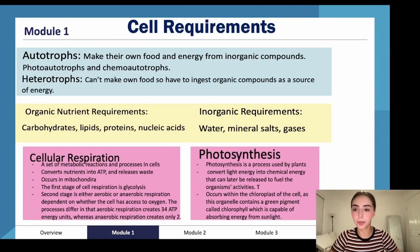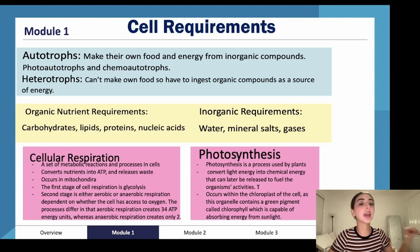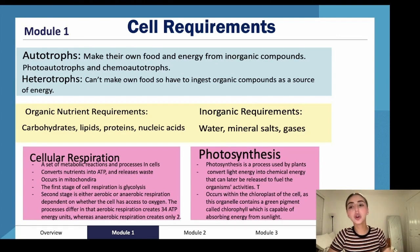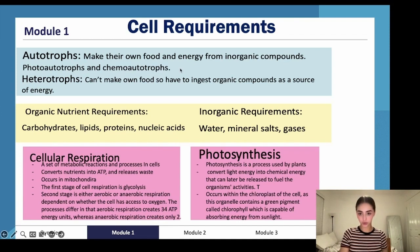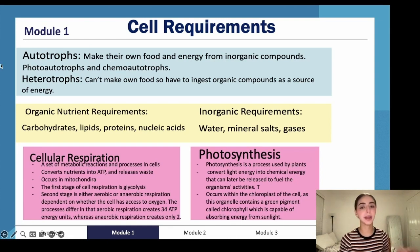So, requirements. We have autotrophs and heterotrophs. Autotrophs make their own food and energy from inorganic compounds. There are two types of autotrophs: photo-autotrophs and chemo-autotrophs.